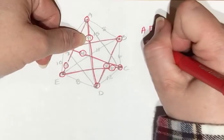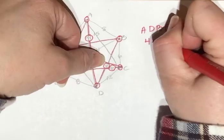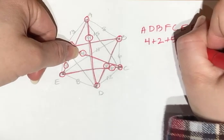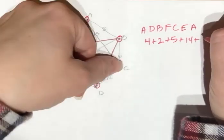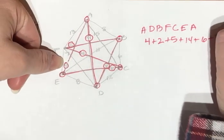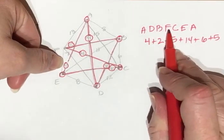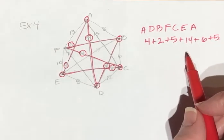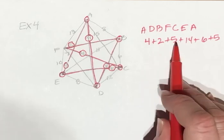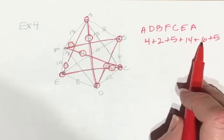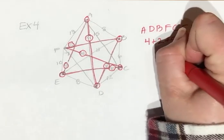So my lengths are 4, 2, 5, 14, 6, and 5. So this is 6, 11, 25, and 36 for my total length.